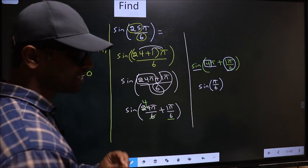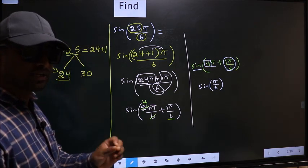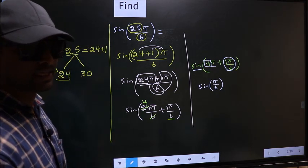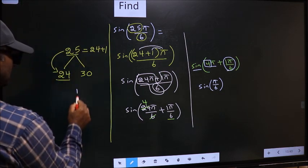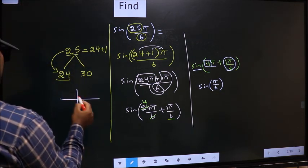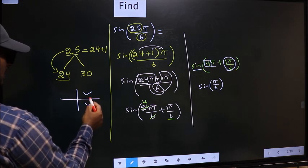4 is even. So for every even multiple of π, the angle lies either in the first quadrant or in the fourth quadrant.